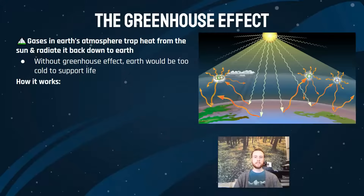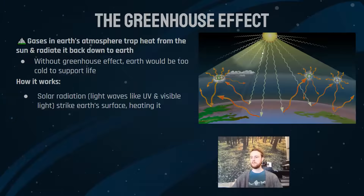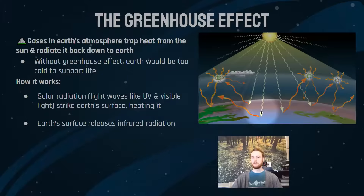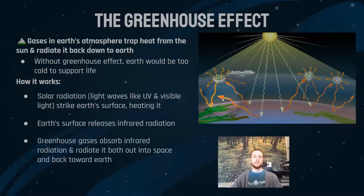Think of the greenhouse effect as a blanket of gases around Earth's surface. The heat it traps comes from the sun. Solar rays — UV light and visible light — come in and when they strike Earth's surface they're converted to infrared radiation. We can't see infrared radiation, but we experience it as warmth or heat. The Earth's surface gives off that infrared radiation, which hits greenhouse gases — here's a molecule of CO2 — and it absorbs that radiation briefly and then radiates it back down towards Earth's surface.